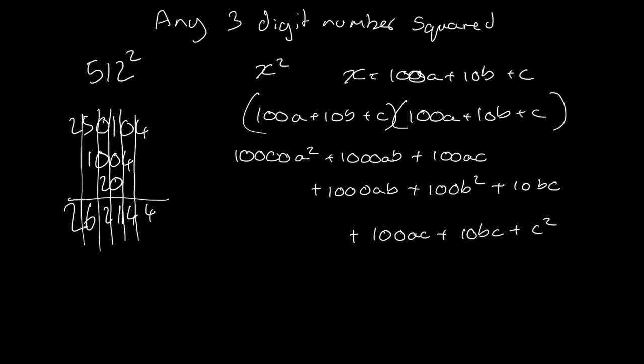What is interesting here is if we look at all of the squared terms. In our original over here on the left-hand side, all of our squared terms are in this first layer at the top. Our 10,000a² is this 25, this 100b² is this 100, and then this c² is this 4.